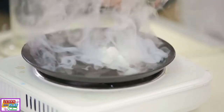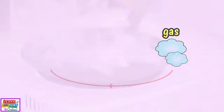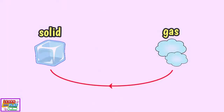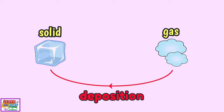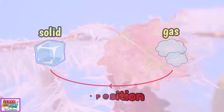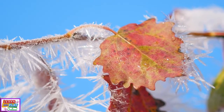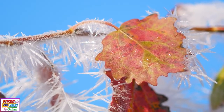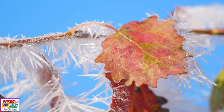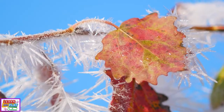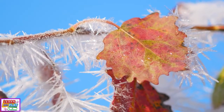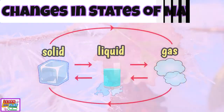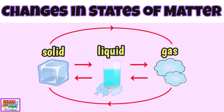The opposite of sublimation is where gas matter changes into solid matter, also skipping the liquid state. This process is called deposition. An example of this change is when you see frost. The freezing cold temperatures solidify gas matter, turning vapor in the air immediately into ice. We have now covered all the different changes in states of matter. We hope you enjoyed learning all about them.